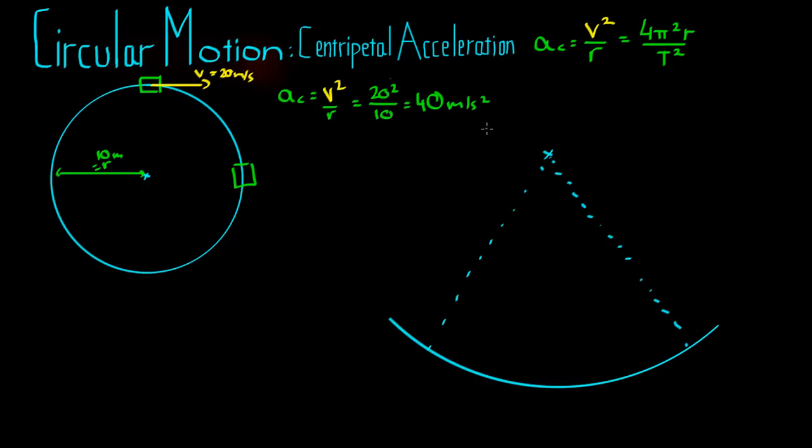We can also use the centripetal acceleration to describe objects that might not be moving in a complete circle, but only part of a circle. So let's look here at a plane moving in a loop. Let's say this plane has moved down in a huge loop, and it's just coming to the bottom there. And the radius of the loop, if we could describe the loop in full, the radius is 100 metres.